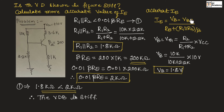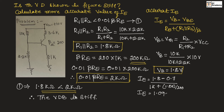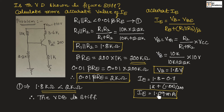Substituting VB in the formula, IE equals 1.8 minus 0.7 divided by 1 kilo plus 1.8 kilo divided by 200, giving IE equals 1.09 milliampere. This is the accurate value of IE. Even though we have calculated the accurate value for stiff voltage divider, if we use the simplified analysis, we will get approximately the same value. That is why we normally do not calculate the accurate value of emitter current for stiff voltage divider, but here the problem specifically asked for it.